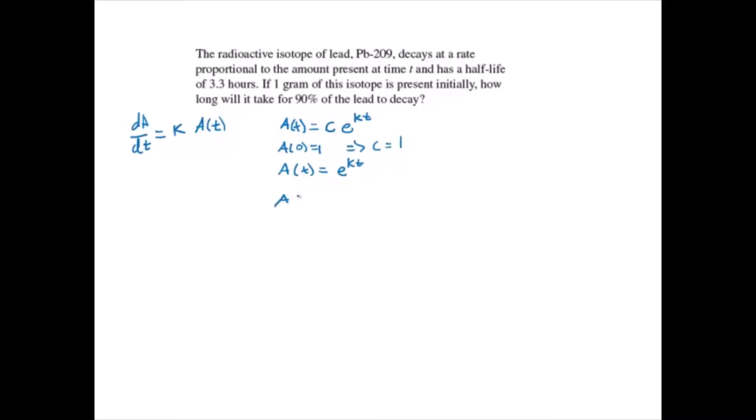Now we know A(3.3) is equal to 1/2. So if we set that equal to e to the k times 3.3, we can solve for k to give us k is equal to 1 over 3.3 times the natural log of 1/2.